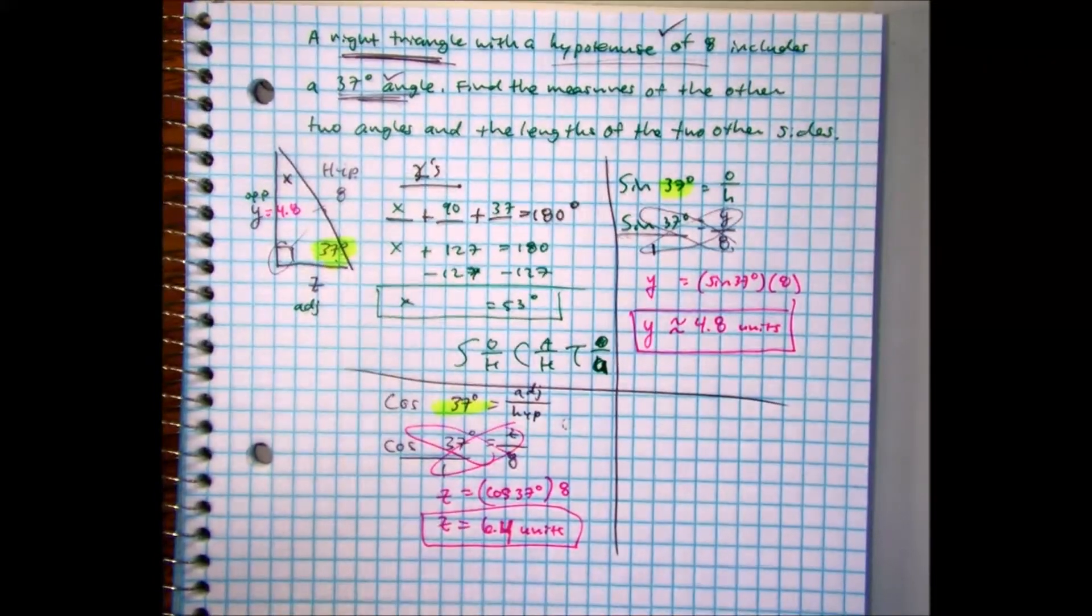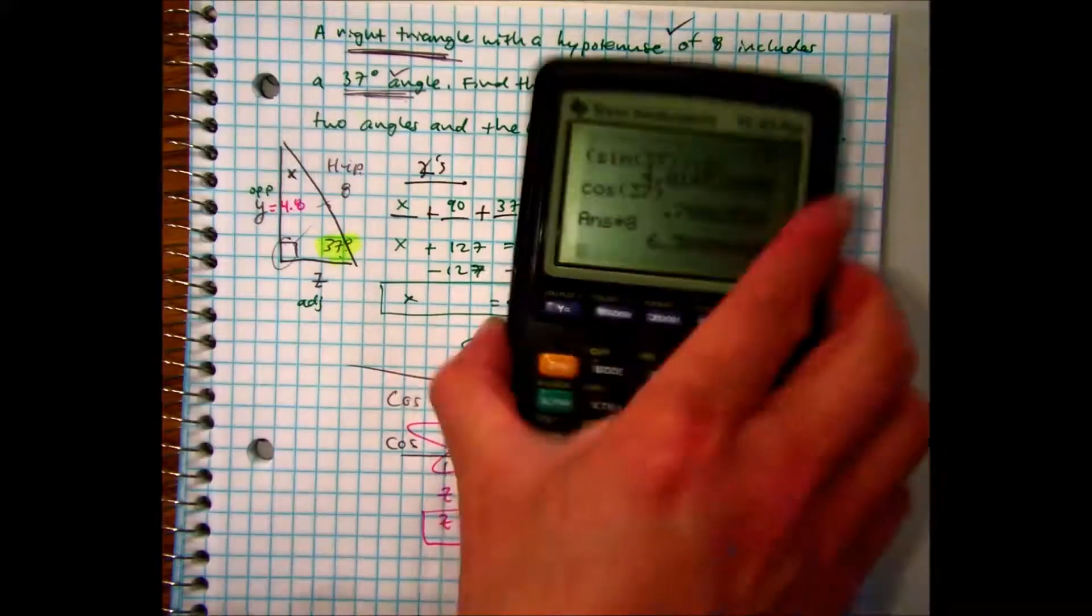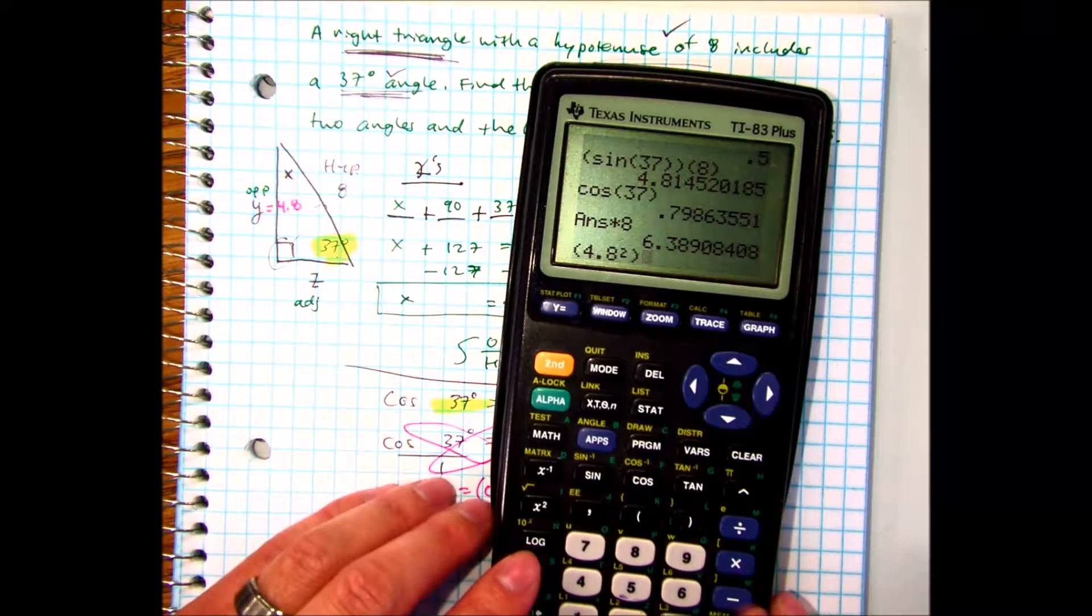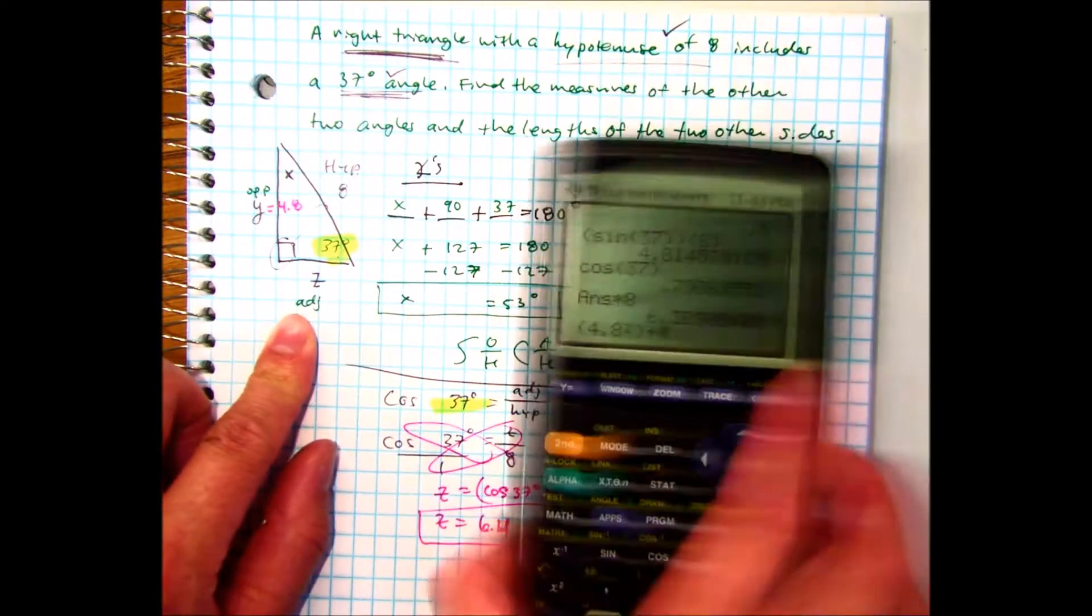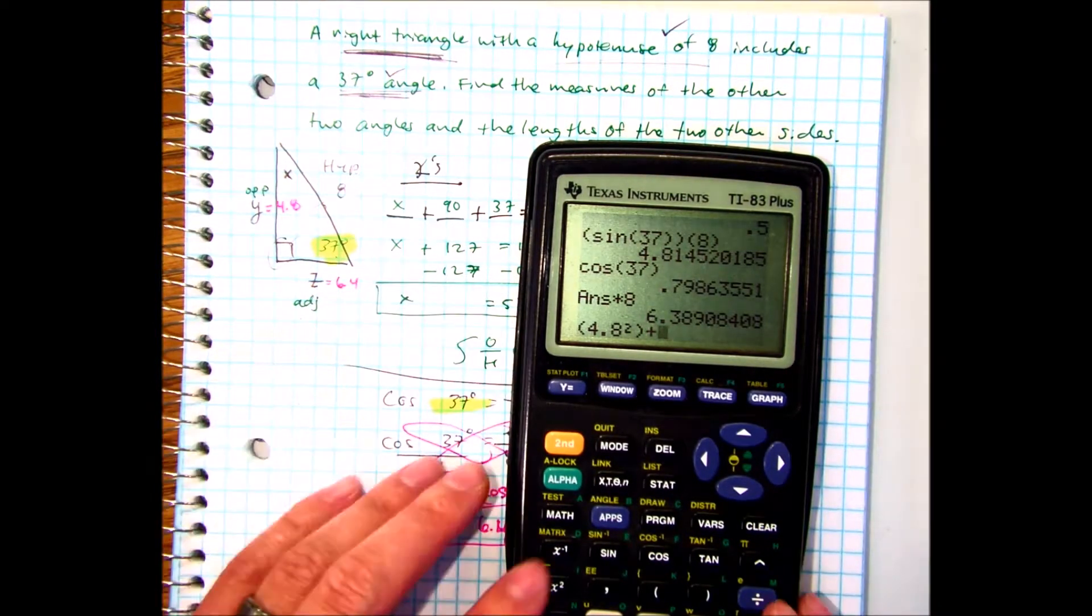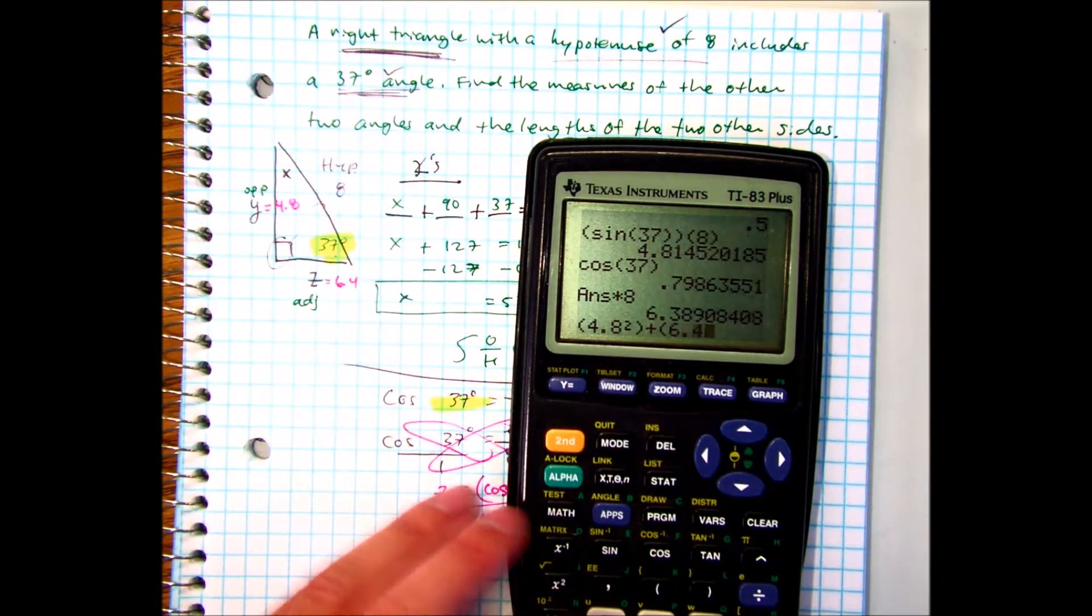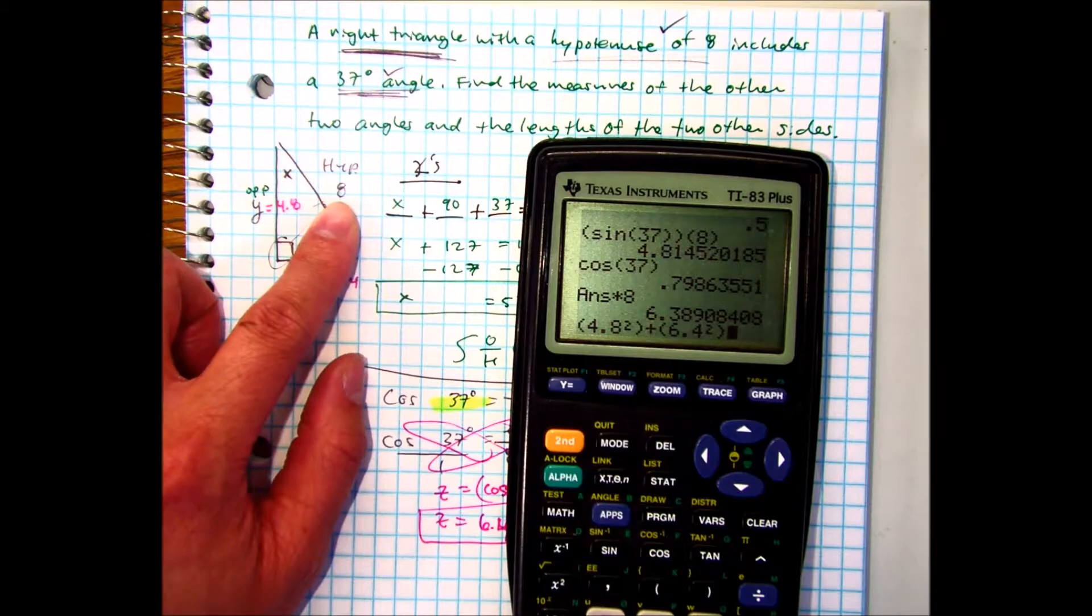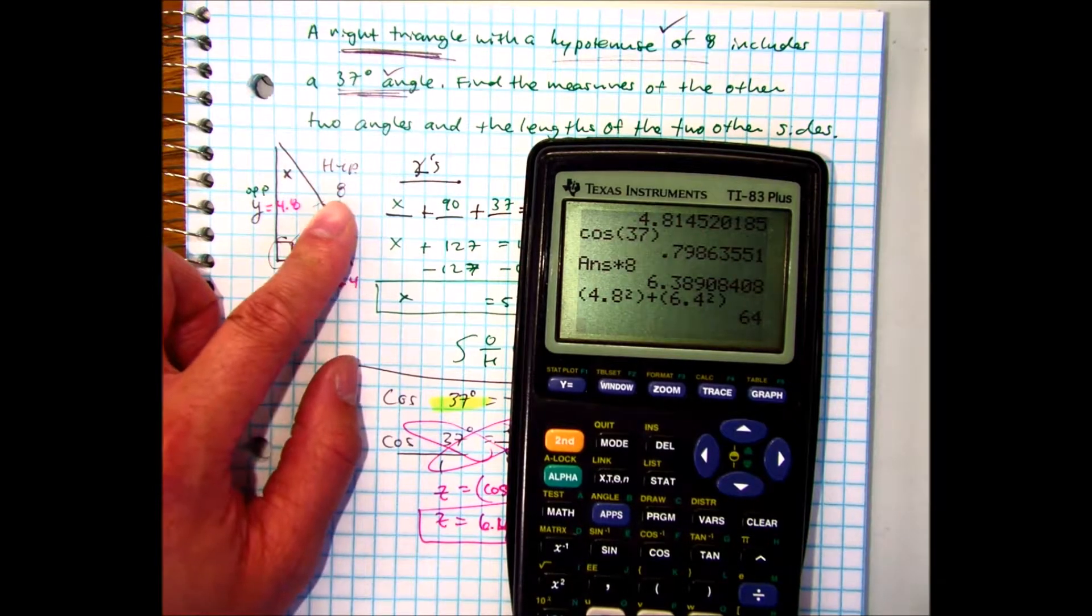Raise your hand if you got that. And you can always double-check that by using the Pythagorean theorem. So if I take 4.8 squared and I add that to our answer of 6.4, I should get 8 squared, which is 64. And that's the case.